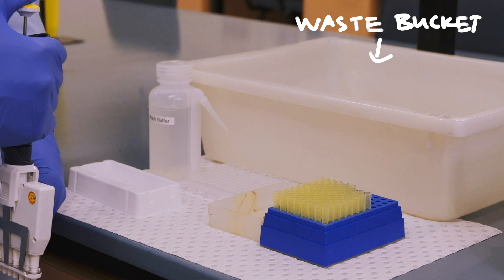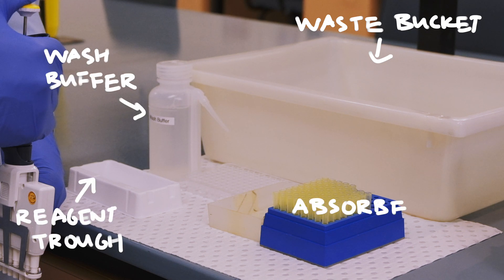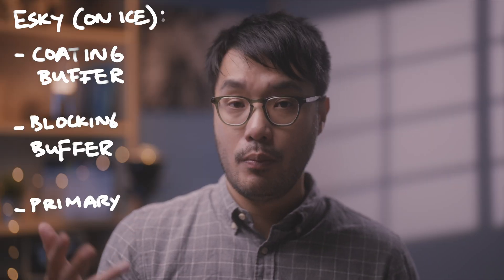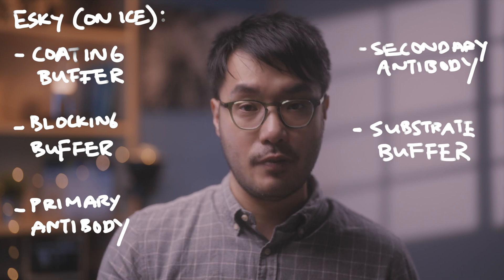The workbench area is set up with a waste bucket, reagent trough, wash buffer, and an absorbent mat. The setup contains the coating buffer, blocking buffer, primary and secondary antibodies, and substrate buffer.